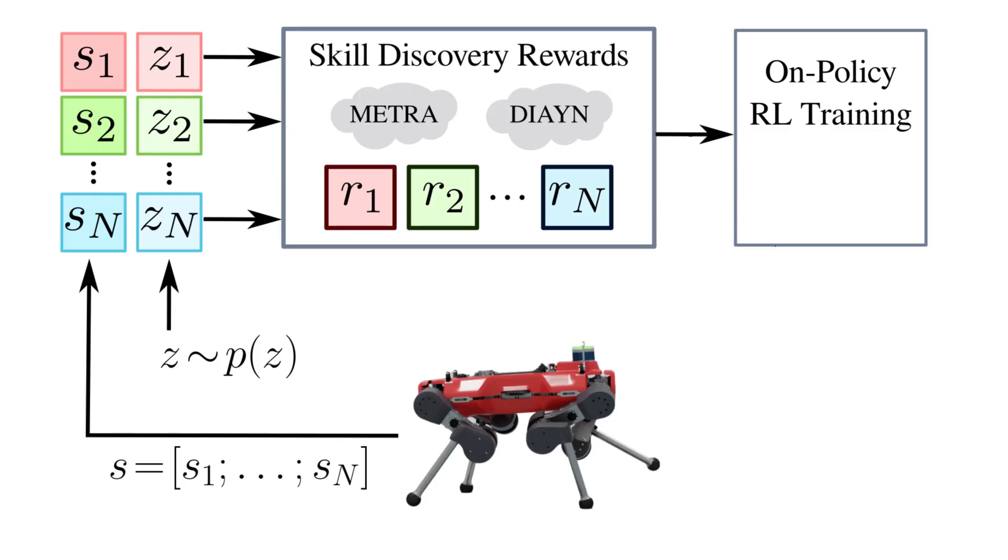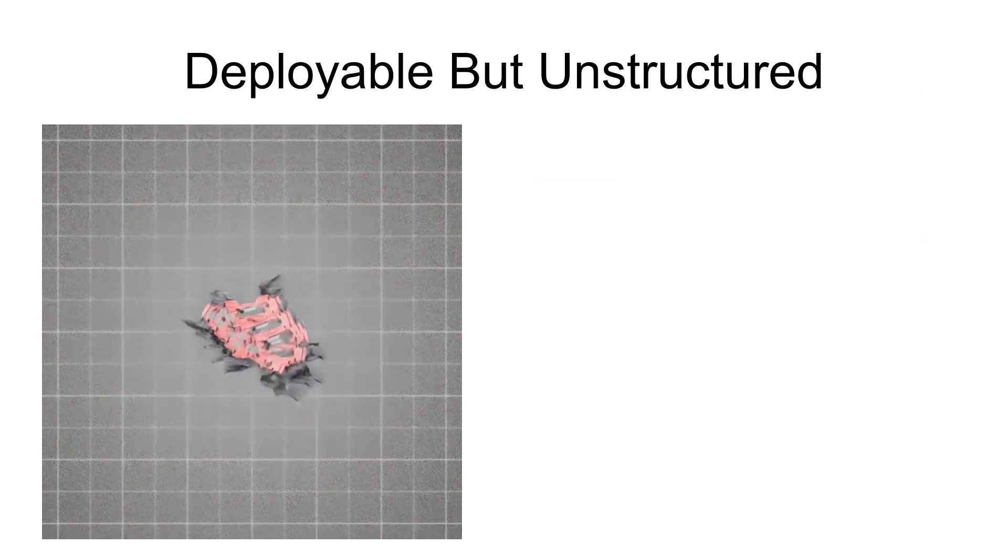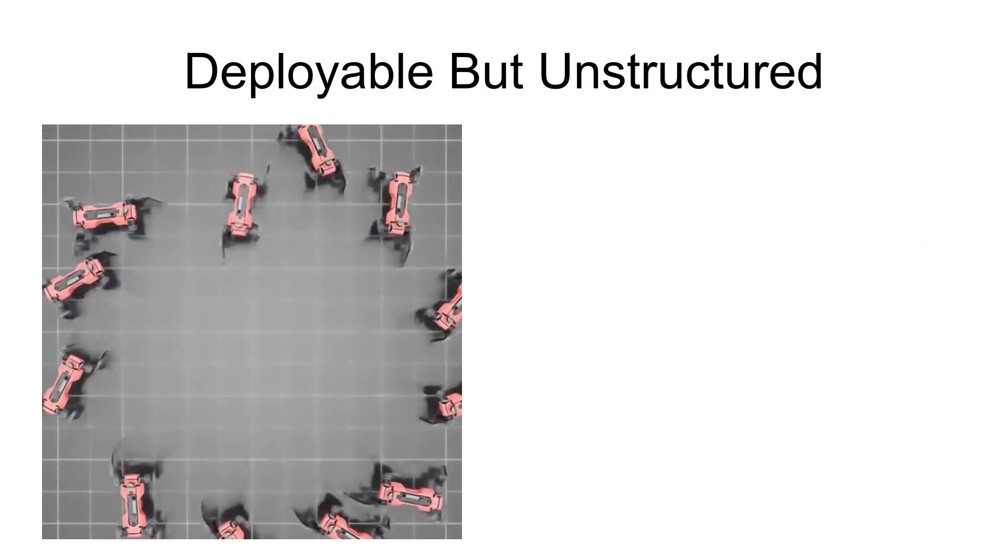To address this, we introduce a style factor. This provides an additional extrinsic reward that guides the policy towards safe and stable actions. In our work, this style reward simply encourages the robot to maintain a neutral standing posture. With the style factor, our skills are now much safer for deployment.